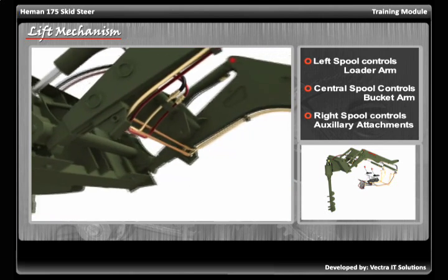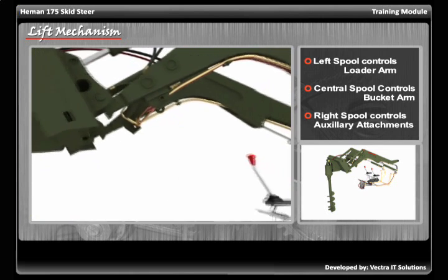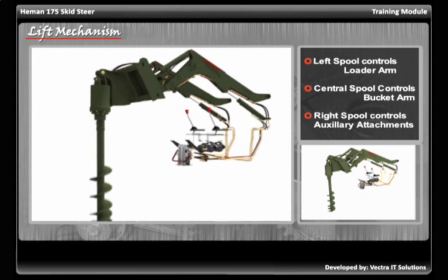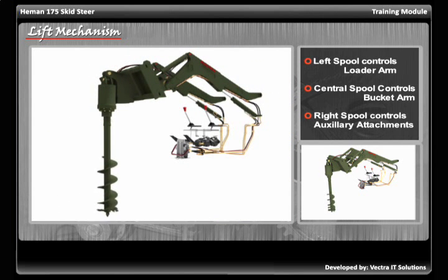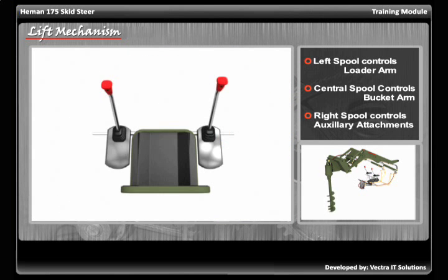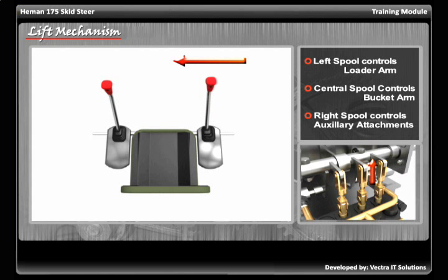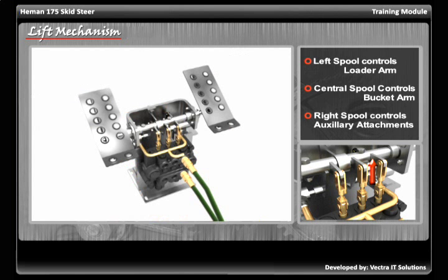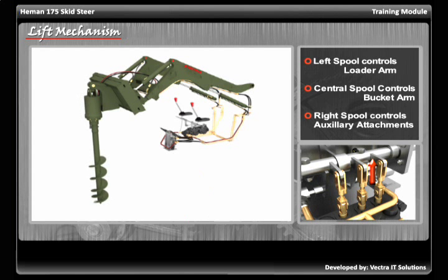The attachment responds to the force of the pressurized oil and starts functioning. Similarly, pulling the control lever towards the operator pulls up the spool of the valve block, which results in the lower port becoming the escape route for the pressurized oil, and the attachment functions in the opposite direction.